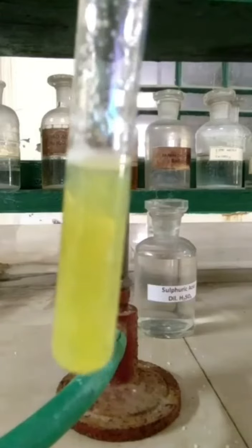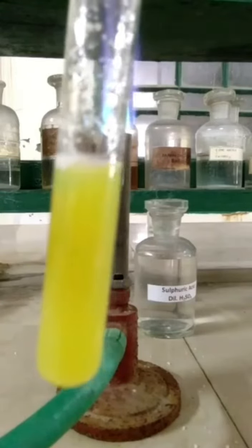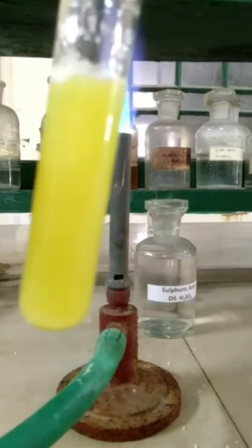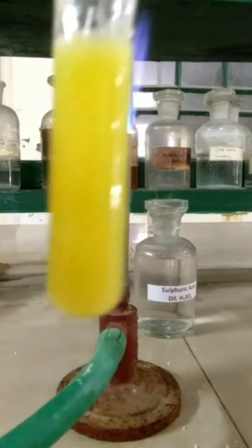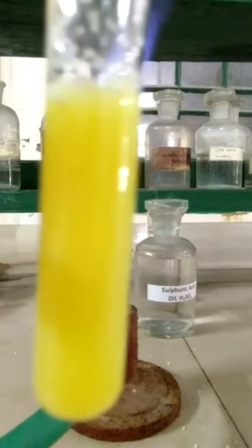The appearance of yellow precipitate will confirm the presence of second group cation and arsenic 3 plus ion may be present.